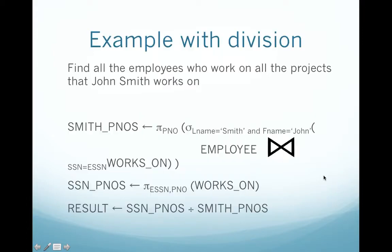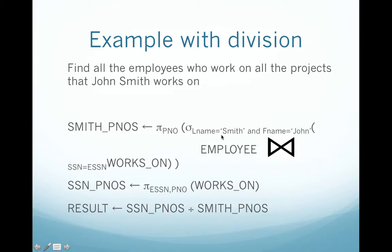Let's try an example of divide. Find all the employees who work on all the projects that John Smith works on. To identify that you need the division operator, just look for the phrase 'all the projects that John Smith works on' — that 'all' tells us to use the division operator. You have employee joined with works on where SSN equals ESSN, then select last name Smith and first name John, then project the project number into Smith project numbers. This finds the projects that John Smith works on and returns their project numbers.